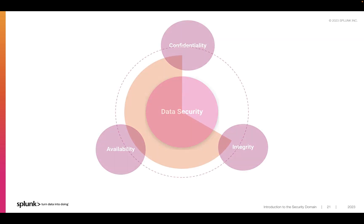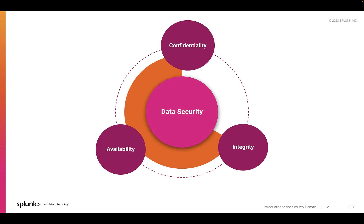Now, what do we mean by protect? A good place to begin is reviewing the principles of the CIA triad. This is not the U.S. Government agency, but the cybersecurity model that refers to confidentiality, integrity, and availability.